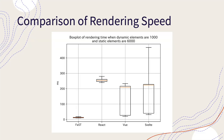This is a comparison of rendering speed between React, Vue, and Svelte using the old method and fast using the proposed method. The test was performed with a large number of both dynamic and static elements. The test results show that the speed of rendering of the web page was improved very much.